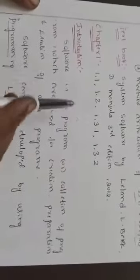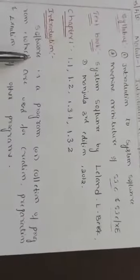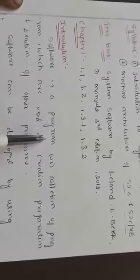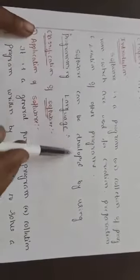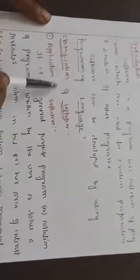Let me move on to what do you mean by system software. For the introduction, first tell me what is software. Software is a program or collection of programs which are used for creation, preparation and execution of other programs. Software can be developed by using programming language.